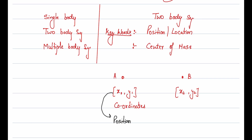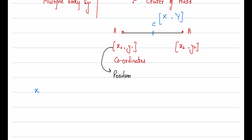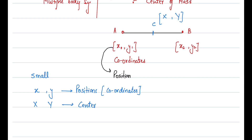Now, where is the center? Let's call the center point C, which has coordinates capital X and capital Y. Many students get confused between small x, y and capital X, Y. Small x and y are called position coordinates, while capital X and capital Y are called center coordinates — the coordinates of the center of mass.